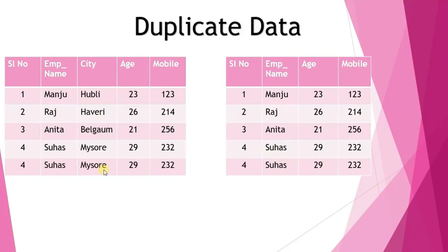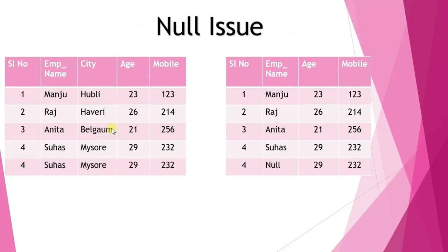Moving to duplicate data: we can get duplicate data as well. You can observe that in both the source and target table, the fourth record is repeated. We have to remove duplicate data in the staging area only — we have to cleanse the data there. That is the purpose of the staging layer. Unless we cleanse the data before loading it into the target table, we will get conflicts between data records.